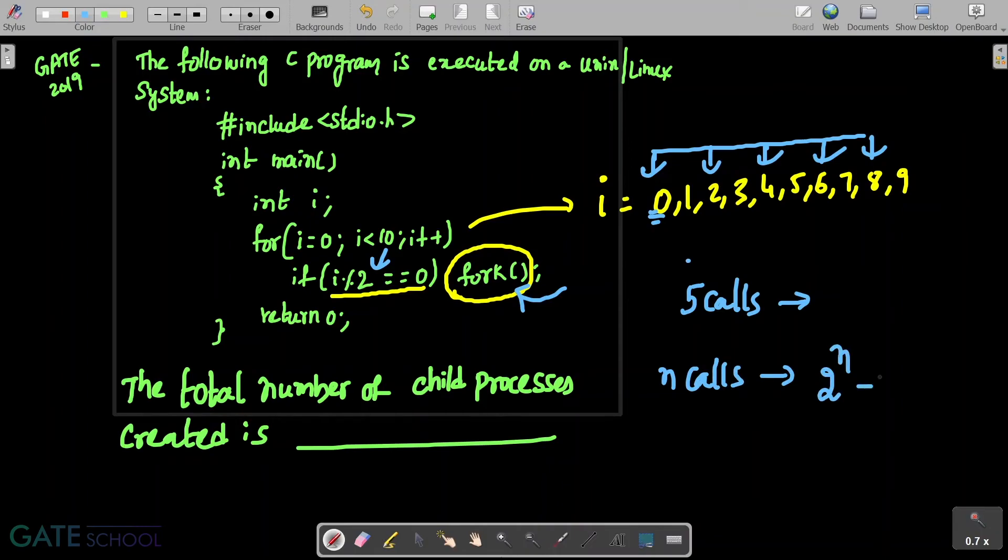Whenever there are n number of fork calls, then you can see there will be 2^n - 1 child processes created, because this minus one will be representing the original parent process. Given that clearly five calls it is going to make.